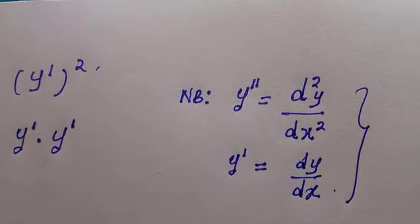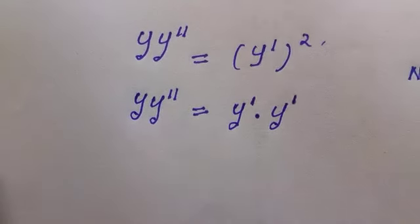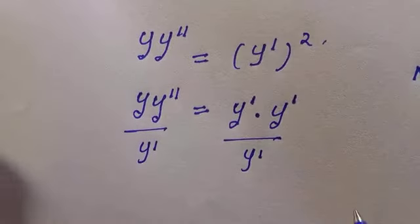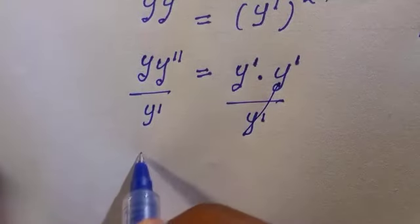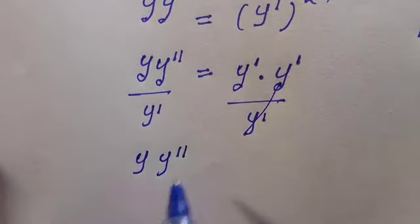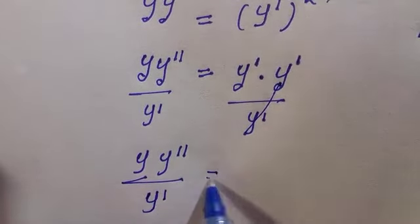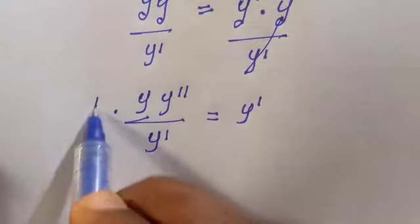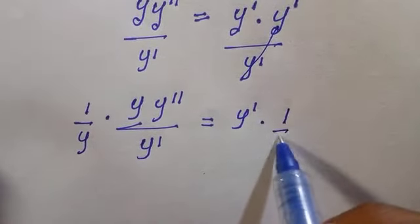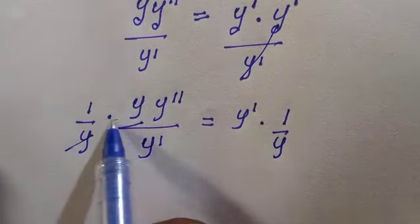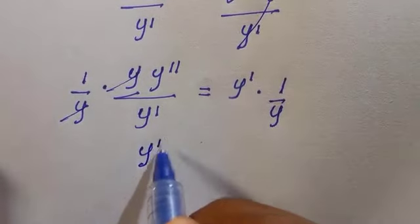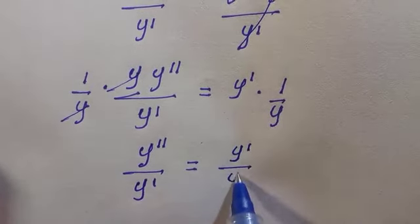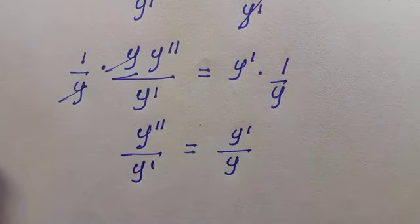Everything here is with respect to x. Let's divide both sides by y', so one of the y' terms cancels, giving us y·y''/y' equals y'. Then multiply both sides by 1/y, so y cancels, and we have y''/y' equals y'/y.